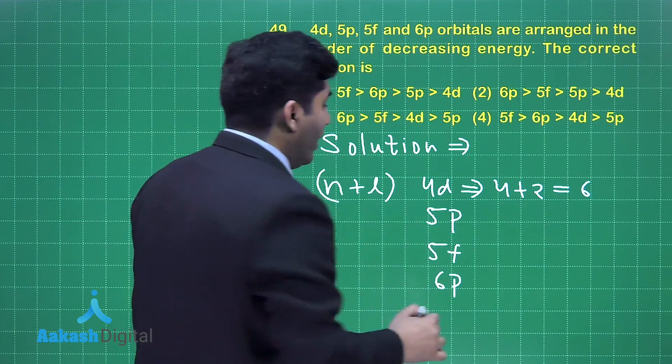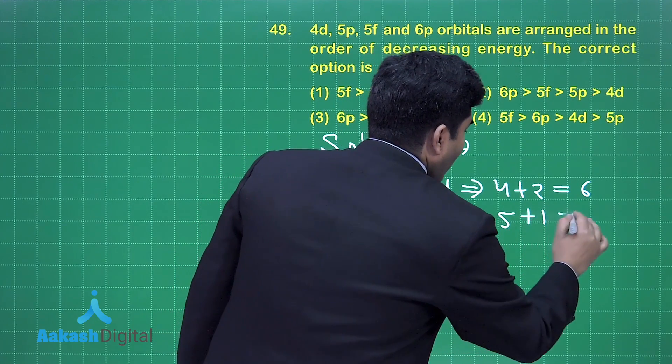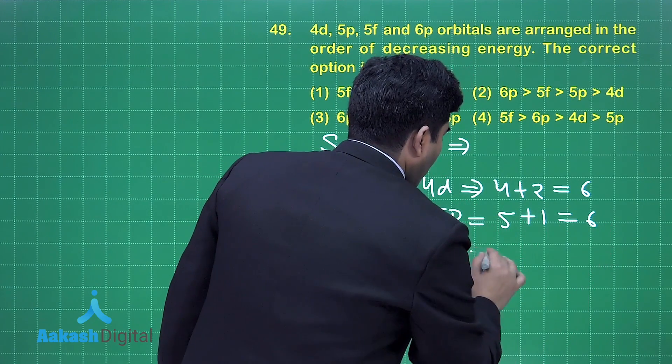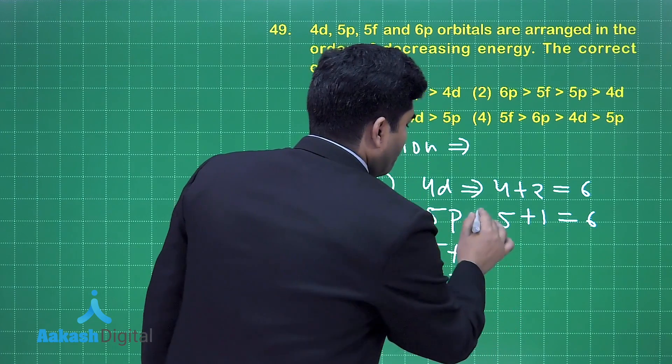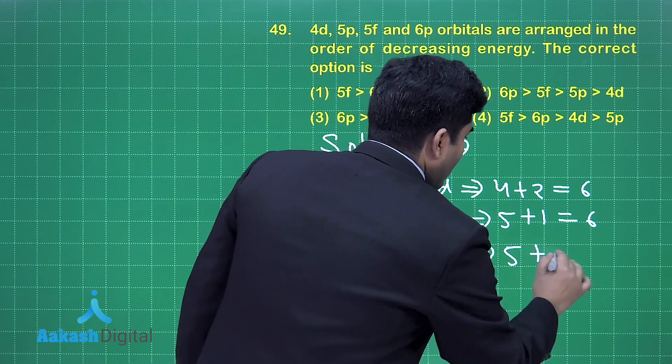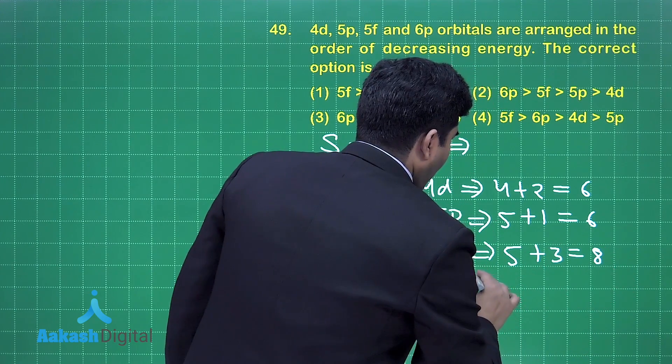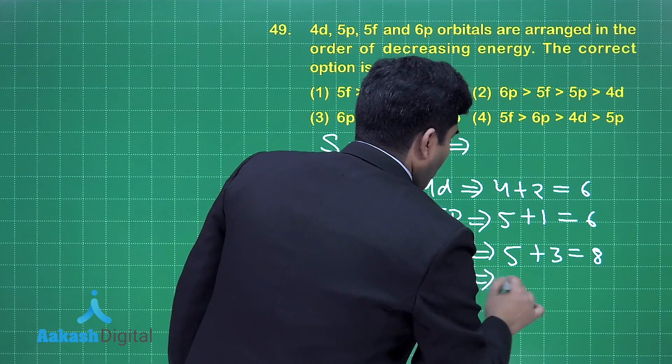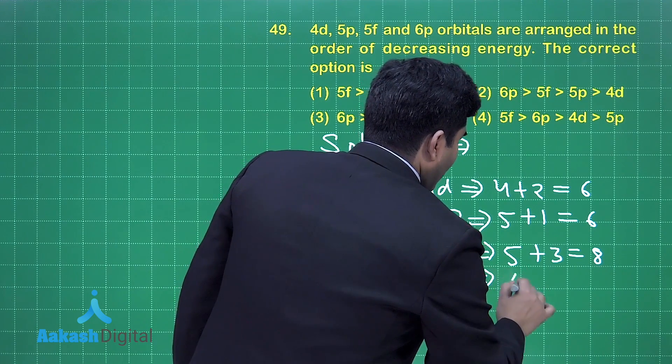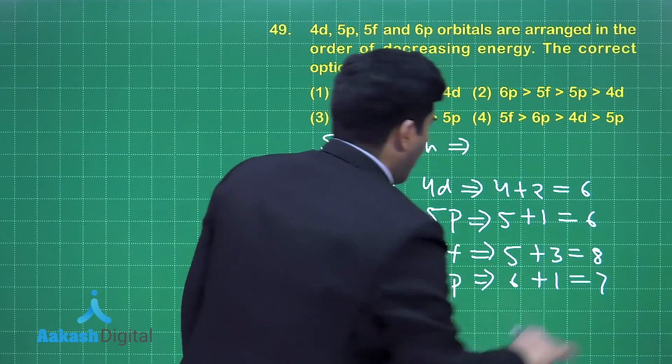Right, in the same way 5+1 is equal to again 6. And this is equal to 5+3=8. And in this it is 6+1 that is equal to 7.